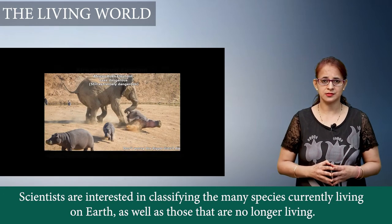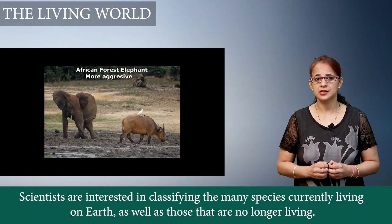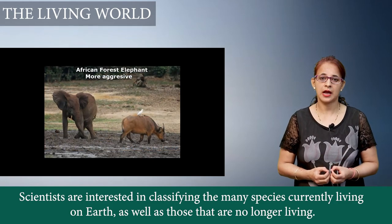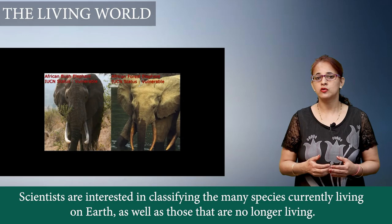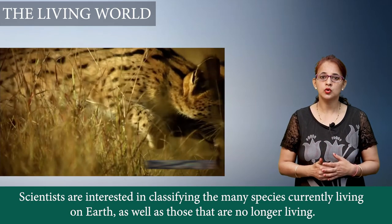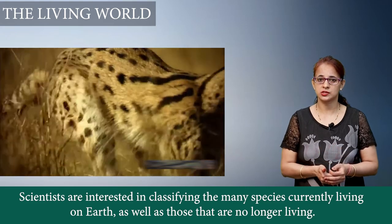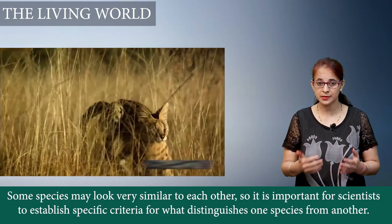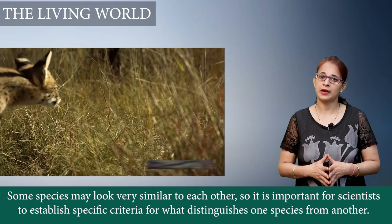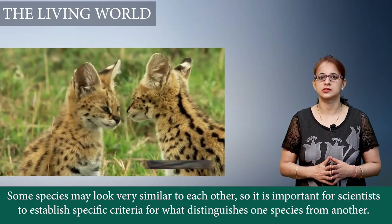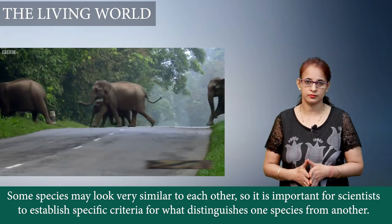We can see that there is a lot of diversity. Taxonomy is a very intriguing branch that helps scientists find out about various species which are still undiscovered. There might even be certain species which have become extinct and have still not been discovered yet.